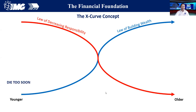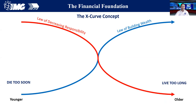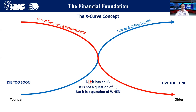What if we die too soon and we live too long? It's a financial problem, actually. Because life has an if, but it is not a question of if — it is a question of when.